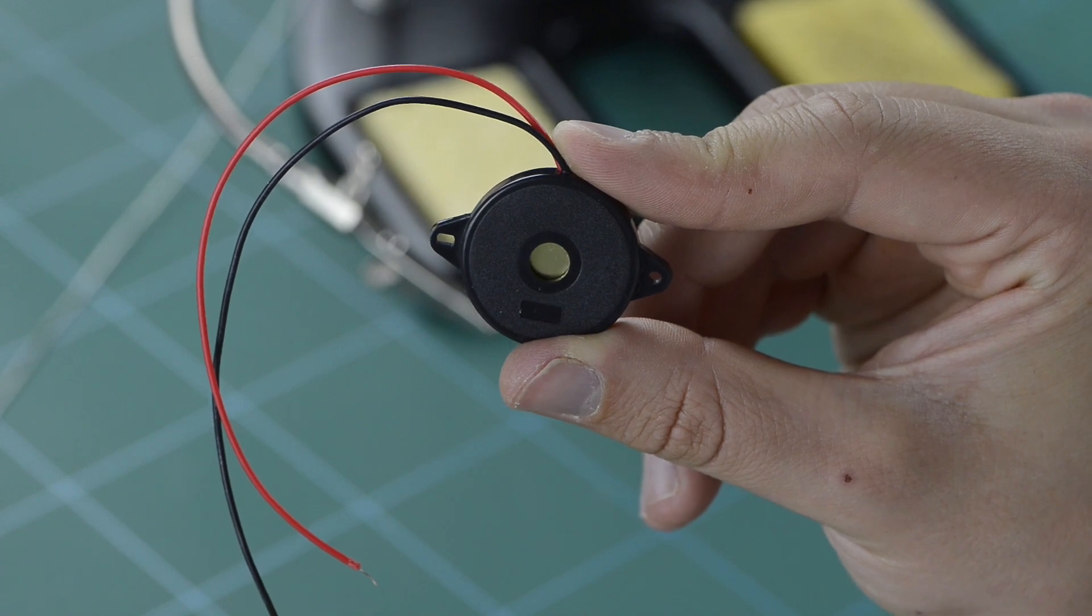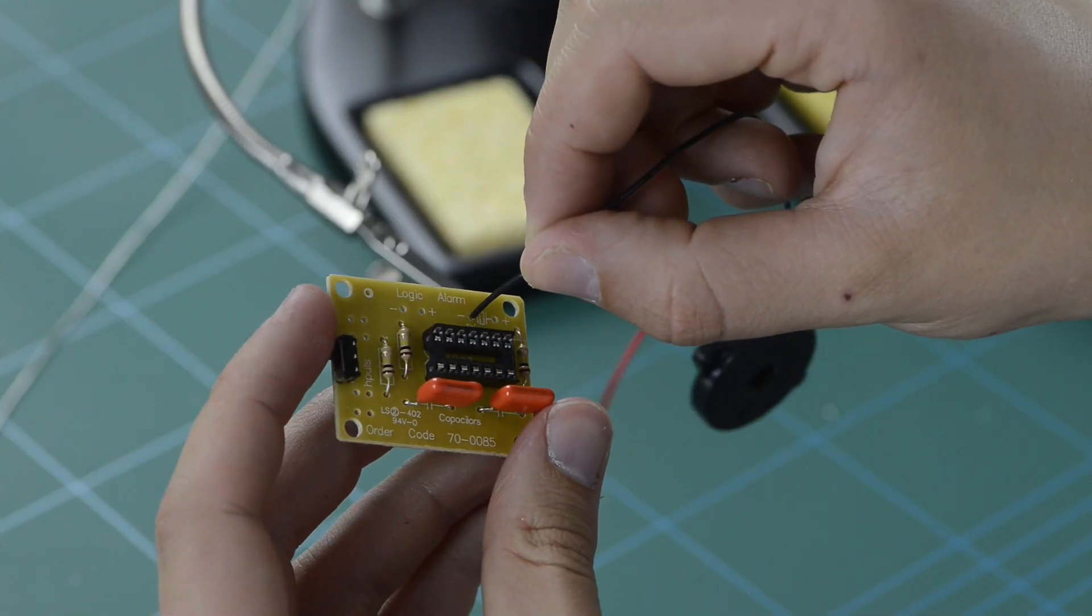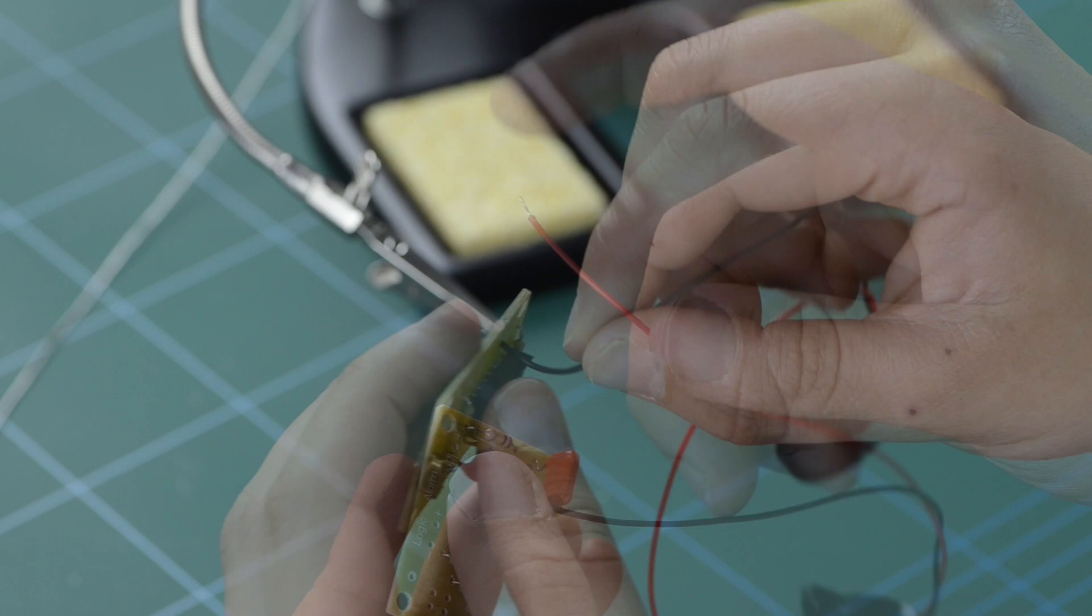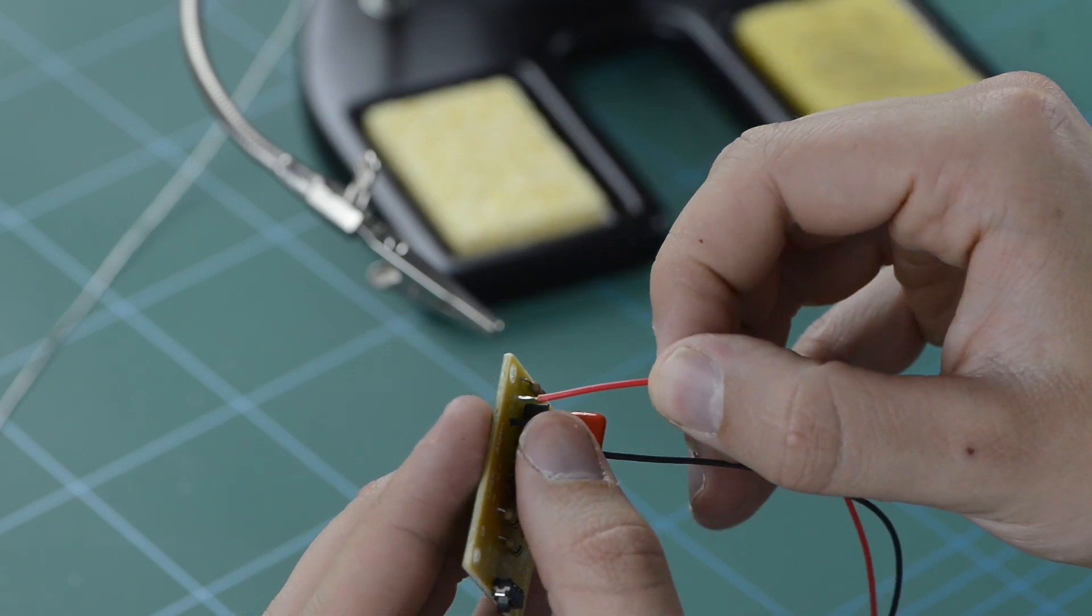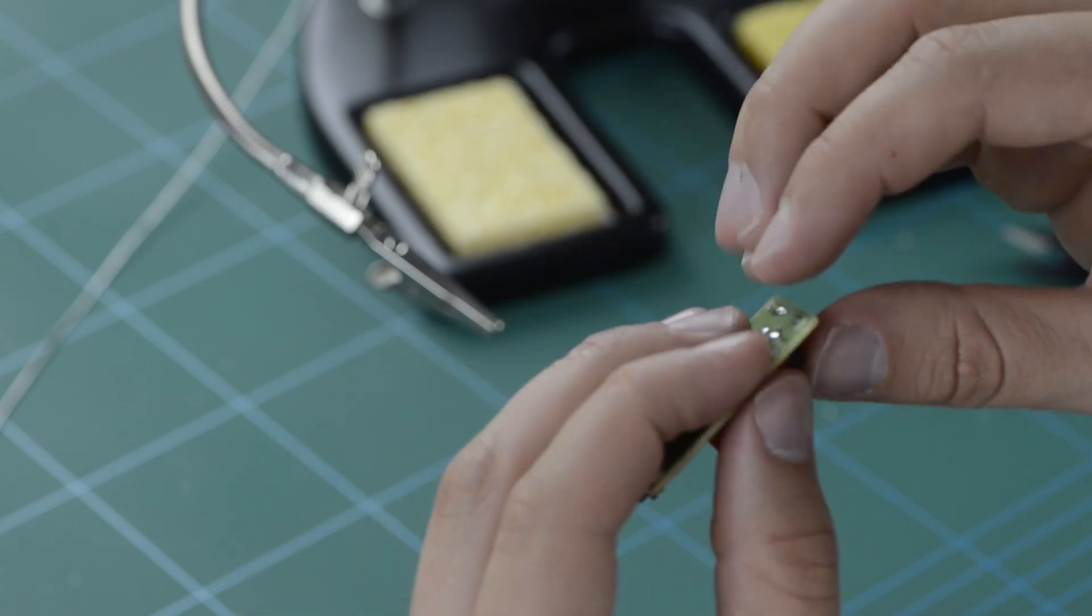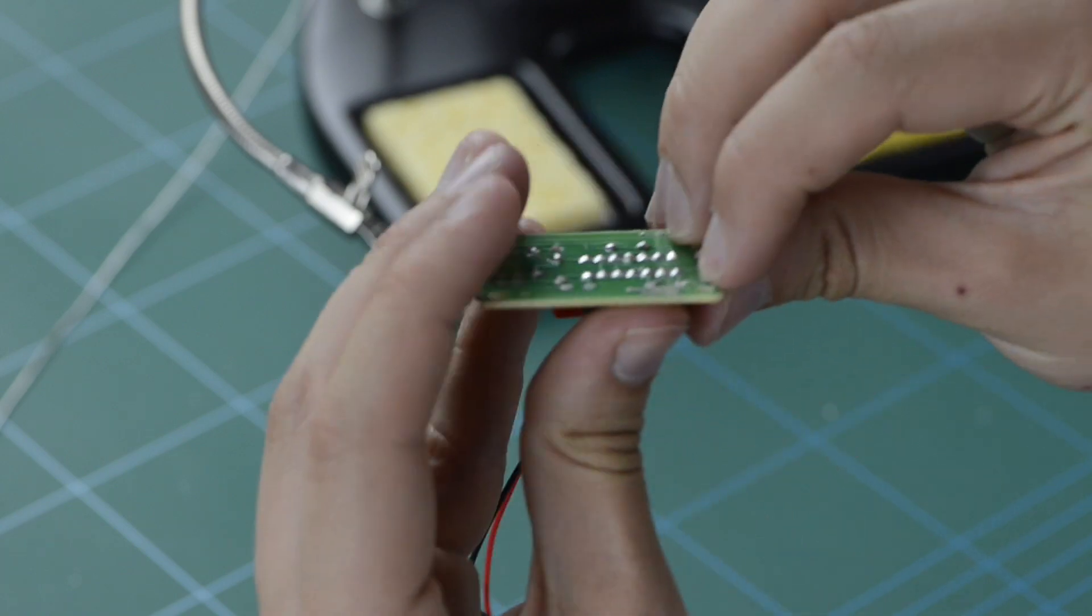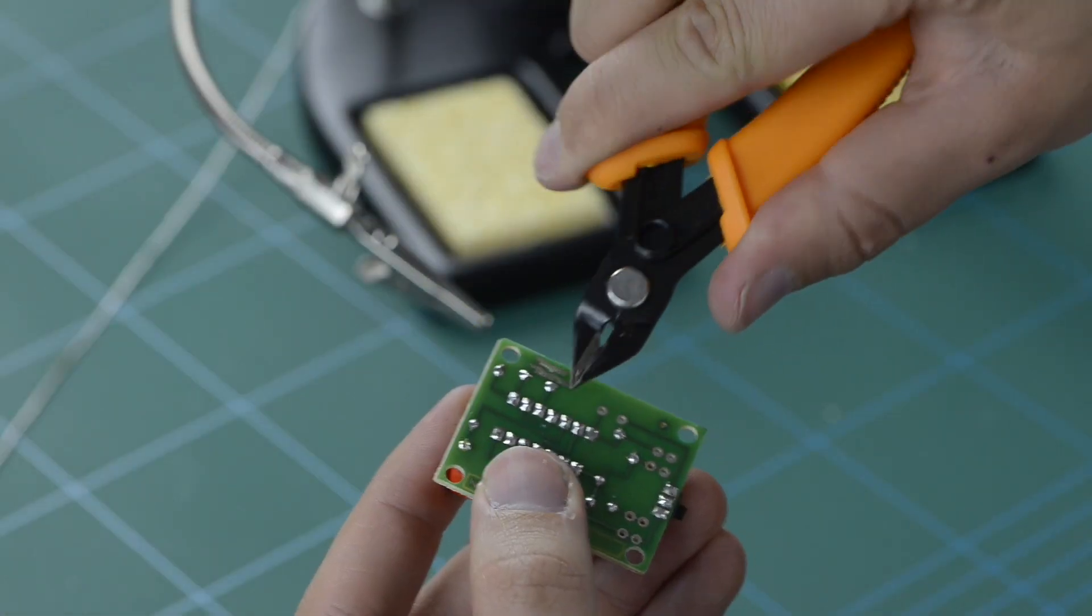Now select your piezo sounder and pop the tinned wires through the designated holes on the PCB for this unit, ensuring that the red wire is threaded through the hole with the positive symbol next to it. Bend the wires back against the PCB, solder into place and remove any excess wire.